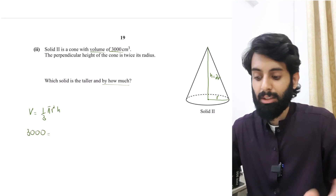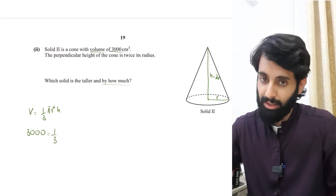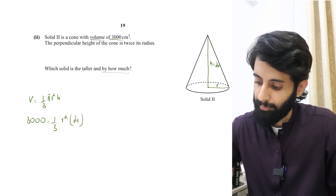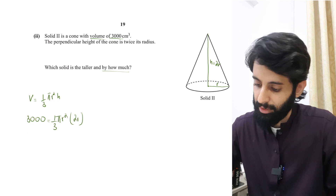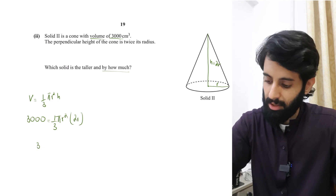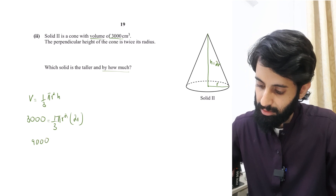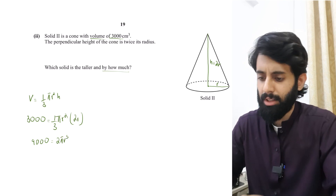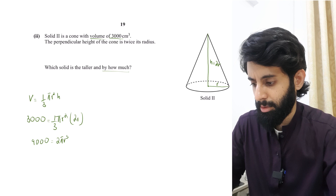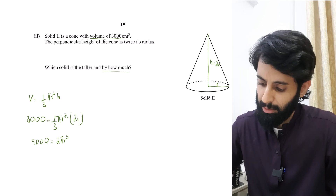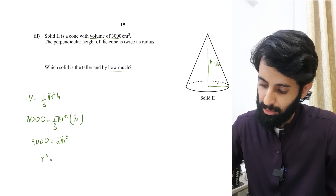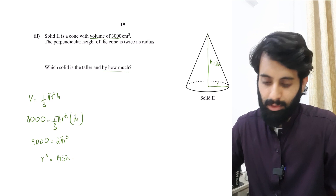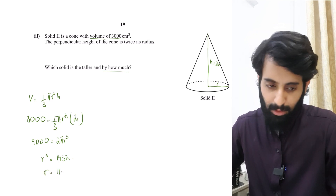Plugging in: 3000 = (1/3)π r² × 2r = (2/3)π r³. Cross-multiplying gives 9000 = 2π r³. Using a calculator, r³ = 9000 ÷ (2π) ≈ 1432.something, so taking the cube root gives r ≈ 11.27.